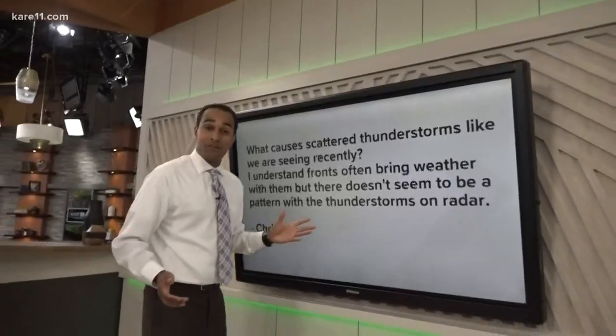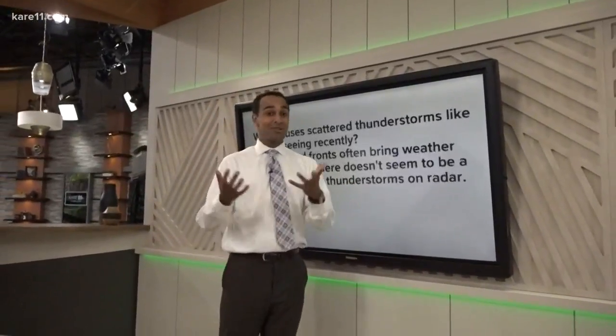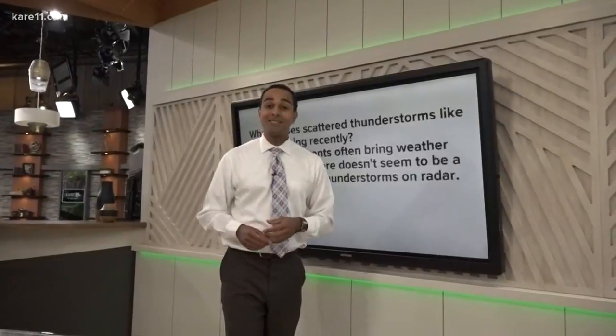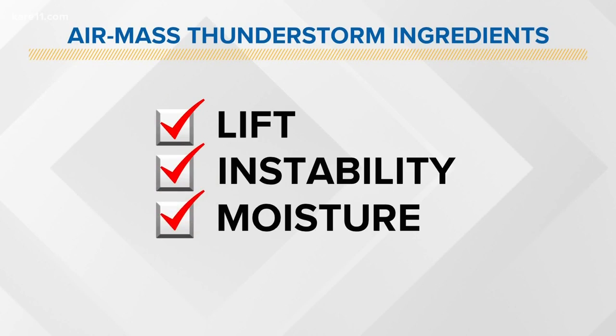Well, thanks for your question, Chris. What these are actually called are air mass thunderstorms. To create them we need three basic ingredients: lift, instability, and moisture.